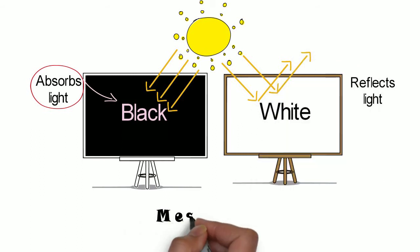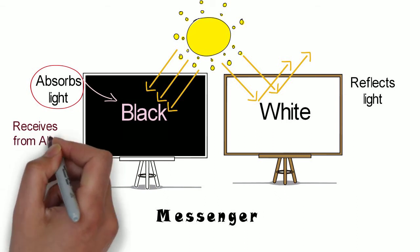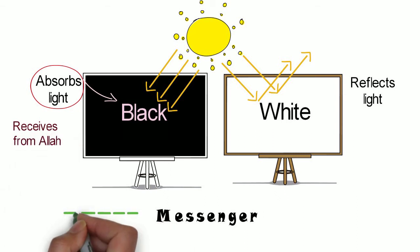So a messenger has two aspects. One of receiving things from Allah. In that respect he is Nabi.